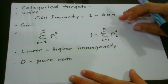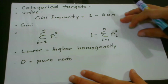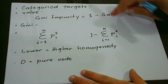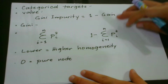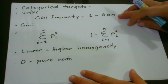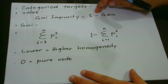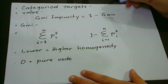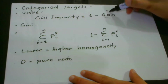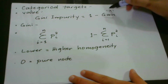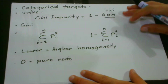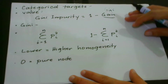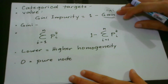So what then is the Gini impurity value? Your Gini impurity value can be computed using this formula: one minus Gini. The Gini here is also what we call the Gini index. With this being said, you might want to ask: what is then a Gini?